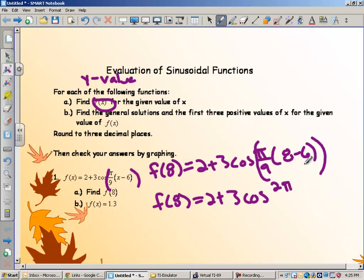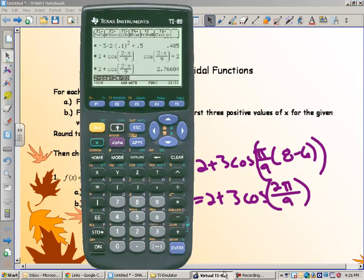I would recommend you go ahead and clean this up a little bit before you type it in on the calculator. 8 minus 6 is 2 and 2 times pi is 2 pi. So this is what I would do before I went to my calculator. So let's go to our calculator here and do 2 plus 3 cosine of 2 pi over 9.